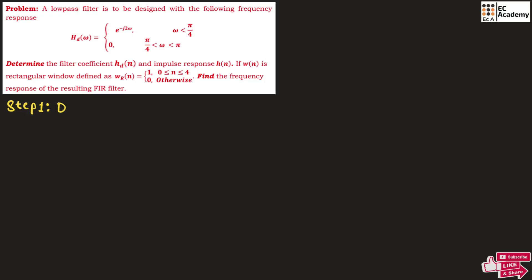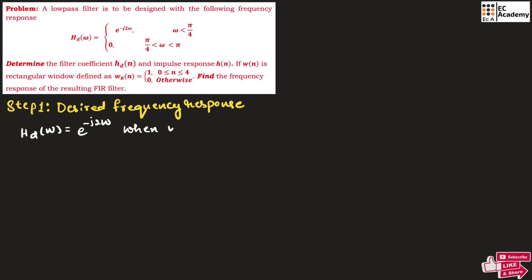Step 1 is to find the desired frequency response. We are given hd of omega equals e to the power of minus j 2 omega when omega is less than pi by 4, and hd of omega equals 0 when omega is between pi by 4 and pi. This represents the desired frequency response of a low pass filter.